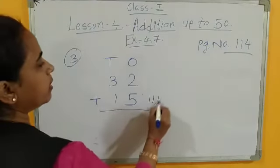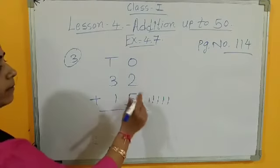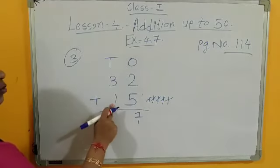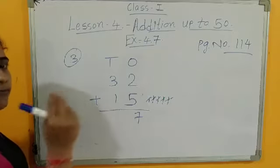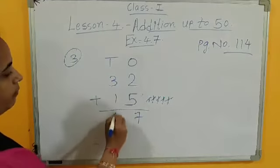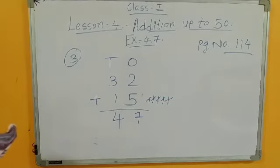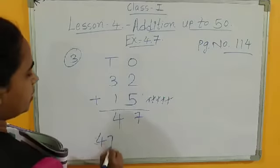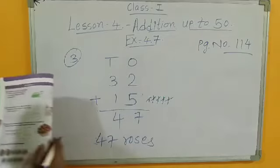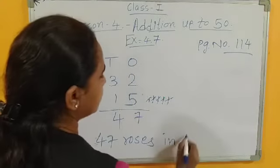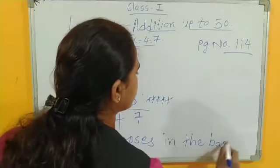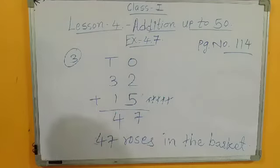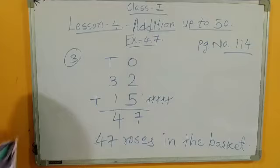2 plus 5, तो 1, 2, 3, 4, 5. 5 lines दो करेंगे, after 2, count. After 2, 3, 4, 5, 6, 7. And here 3 plus 2, sorry, 3 plus 1. After 3, add 1, so how many, 4. So total flowers, 47, 47. Right here, total number of roses, 47 roses in the basket. 47 roses in the basket.